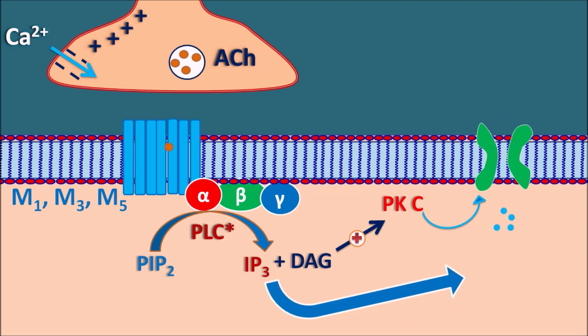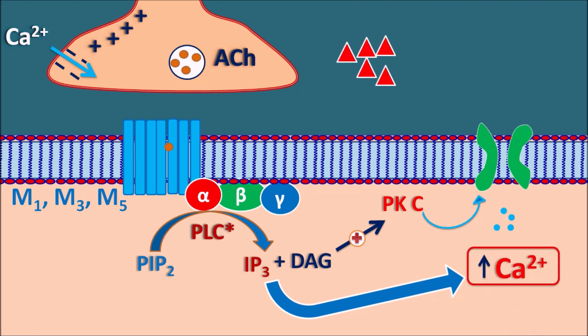IP3 can directly increase the release of calcium from internal stores. In this way, calcium levels are increased within the postsynaptic membrane. This calcium is responsible for cellular actions — for example, within the CNS it produces excitation, and on smooth muscle it produces contraction.